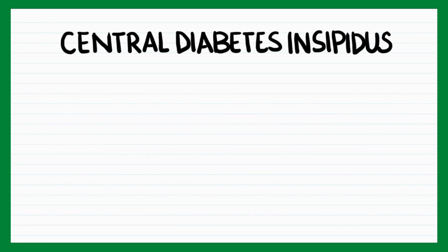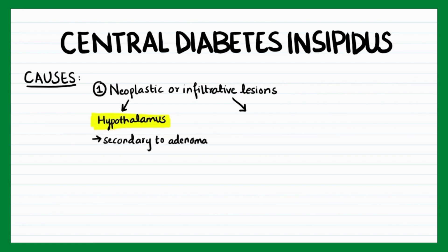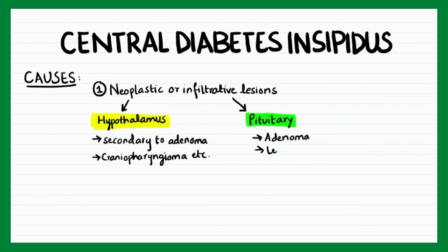Central diabetes insipidus is usually caused by neoplastic or infiltrative lesions of the hypothalamus or pituitary gland. In the hypothalamus, these lesions can be secondary to adenomas, craniopharyngiomas, etc. Whereas in the pituitary gland, adenomas, leukemia, or sarcoid histiocytosis can lead to diabetes insipidus.